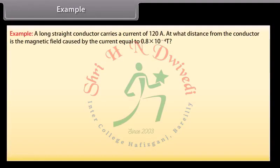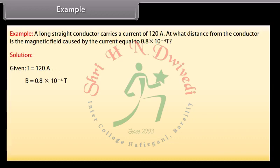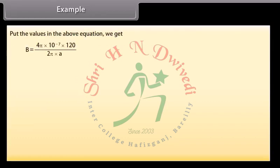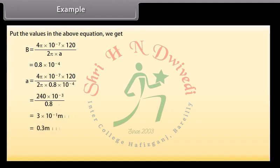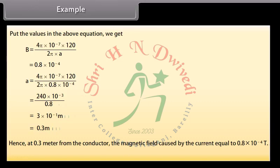Example: A long straight conductor carries a current of 120 ampere. At what distance from the conductor is the magnetic field equal to 0.8 × 10⁻⁴ Tesla? Given: I = 120 A, B = 0.8 × 10⁻⁴ T, mu-0 = 4 pi × 10⁻⁷ SI units. Using B = mu-0 I upon 2 pi R, putting in the values, we get R = 0.3 meters. Hence, at 0.3 meters from the conductor, the magnetic field equals 0.8 × 10⁻⁴ Tesla.